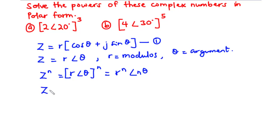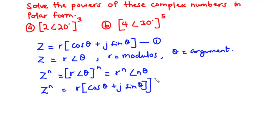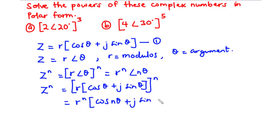Similarly, from equation 1, z exponent n is equal to r multiplied into bracket cos theta plus j sin theta, all exponent n. This becomes r exponent n into bracket cos n theta plus j sin n theta. And this theorem is true for all positive, negative, and fractional values of n, and is used to determine the powers and roots of complex numbers.